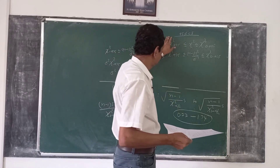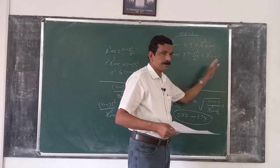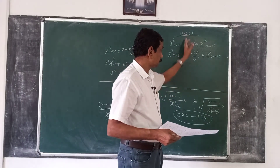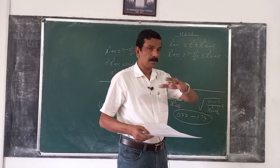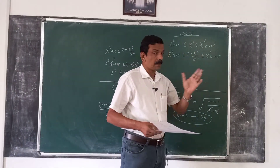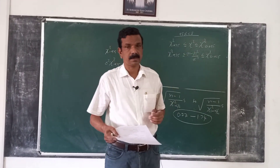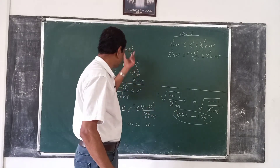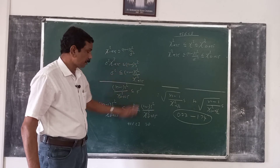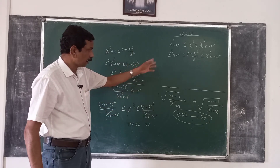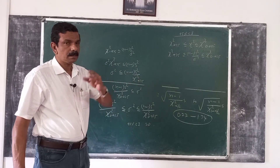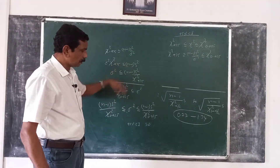Remember, this is derived from the property of the chi-square variable. The construction of a confidence interval using the same procedure was discussed in an earlier class. Here it is stated in terms of variance, but can be converted into standard deviation by taking the square roots.